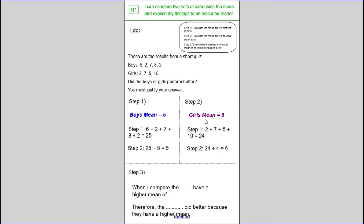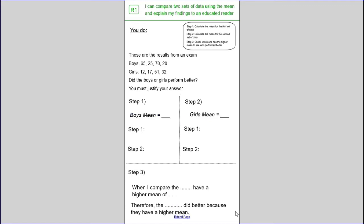For step 3, we're now going to have a look at which one has the higher mean to see who performed better. So when we compare both of the means, the boys have a mean of 5 and the girls have a mean of 6. We can clearly see that the girls' mean is higher, so we're going to circle that. When we compare the girls' mean, they have a higher mean of 6. Finally, therefore, the girls did better because they have a higher mean. And remember, the higher mean means that they've done better. So referring back to the question, remember we were asked to justify and then to write down who did better out of the boys and girls. And we've done exactly that.